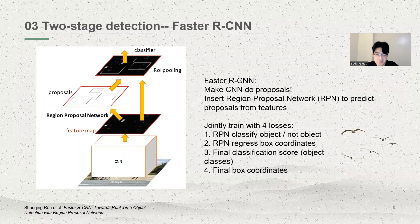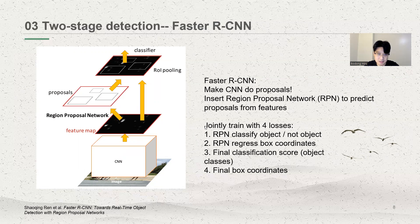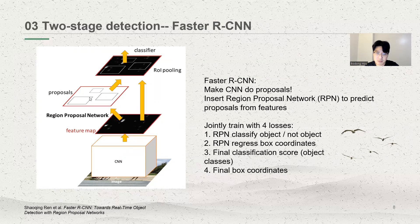The core improvement of Faster RCNN is a region proposal network, known as RPN. First, the region proposals are generated in the feature map, and then each region proposal is classified into two categories: determining whether it is an object or background, and then performing regression of the region proposal to the ground truth. It then classifies again to determine what the specific object is.